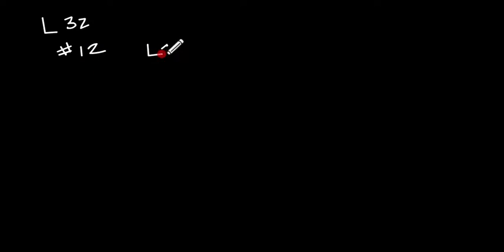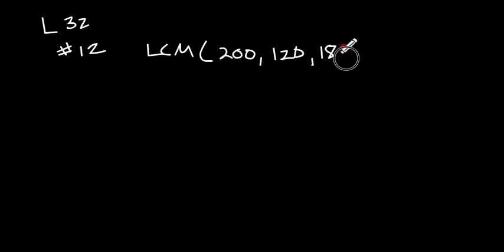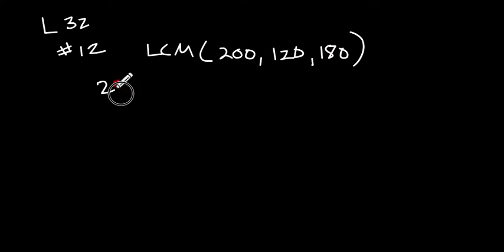Let's do one more. This is from lesson 32, number 12. We want to find the least common multiple of 200, 120, and 180.